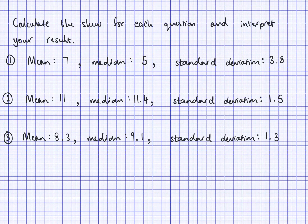Now here are some questions for you to do. You need to calculate the skew for each question and interpret your results using the formula I gave you. In the last example I didn't write down whether it was positive or negative skew, or whether it was weak or strong — but I did say it. So you need to write it down: calculate it first, then interpret that value by saying whether it's a positive or negative skew and also saying whether it's strong or weak.